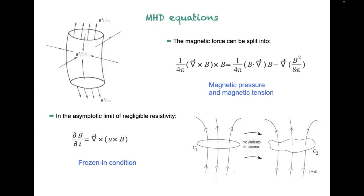The magnetic force can be split into two terms: one can be regarded as magnetic tension — the magnetic field doesn't like to be curved; if you curve it there's a restoring force — and the other is the magnetic pressure, which resists squeezing a bundle of magnetic field lines.